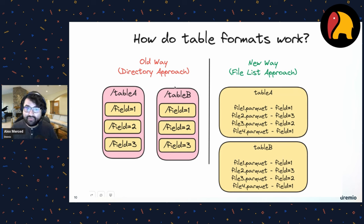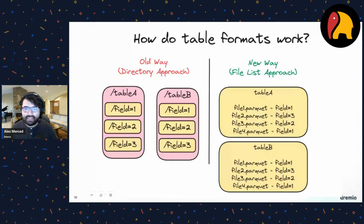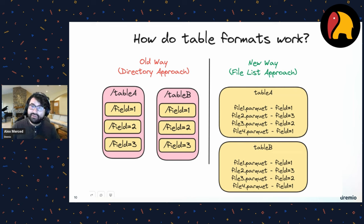In the Hive approach, tables were defined by folders, not files. Partition folders split tables by values like months, tracked by a Hive Metastore. Modern table formats like Apache Iceberg take a file-list approach instead — rather than listing directories, they create and curate lists of individual files including metadata on each file, enabling much more efficient table construction.